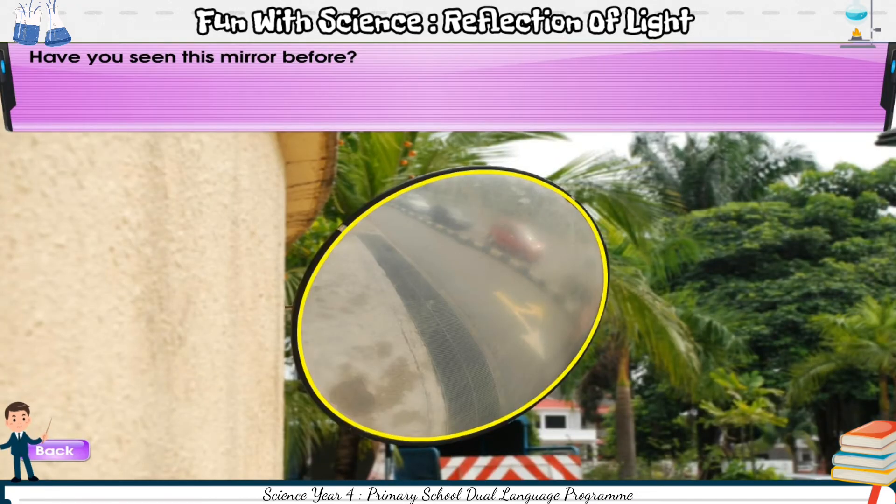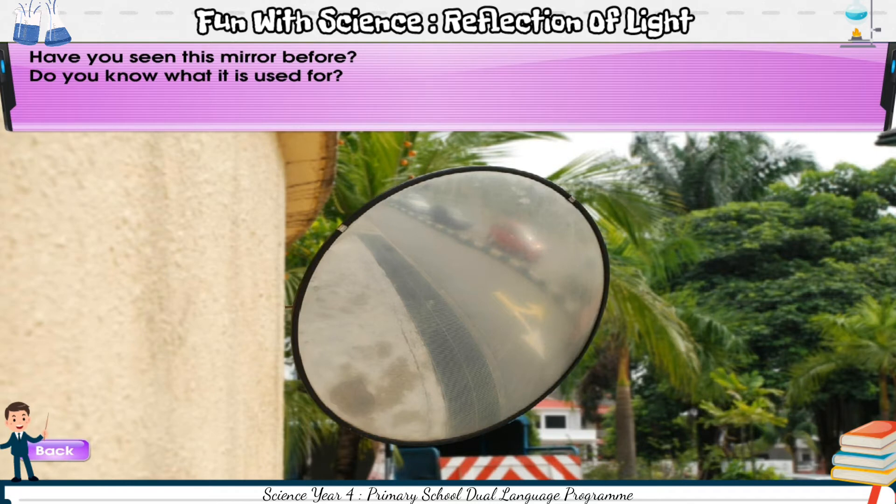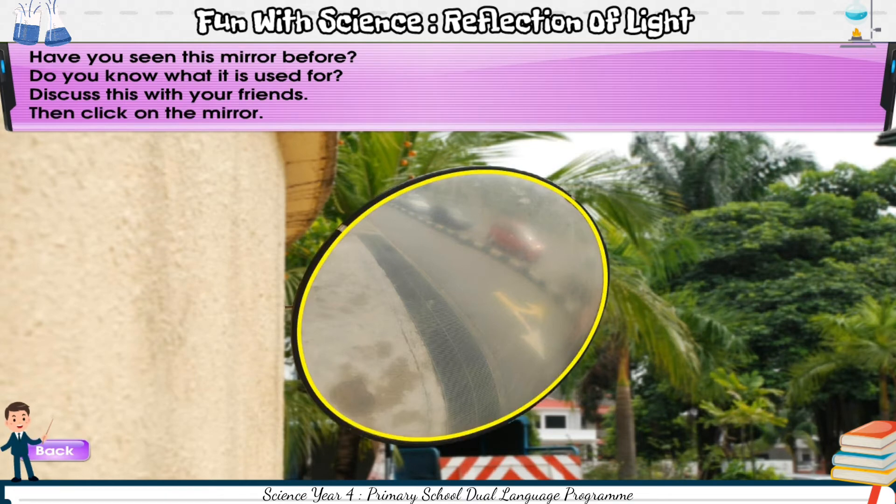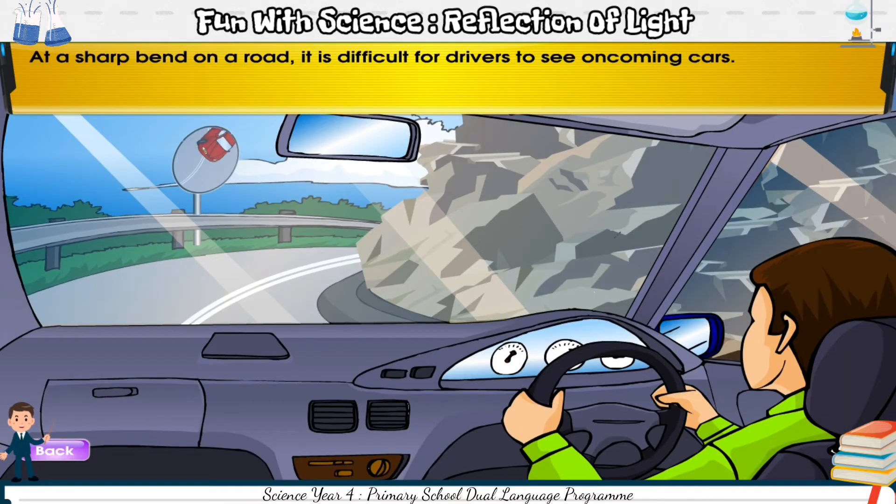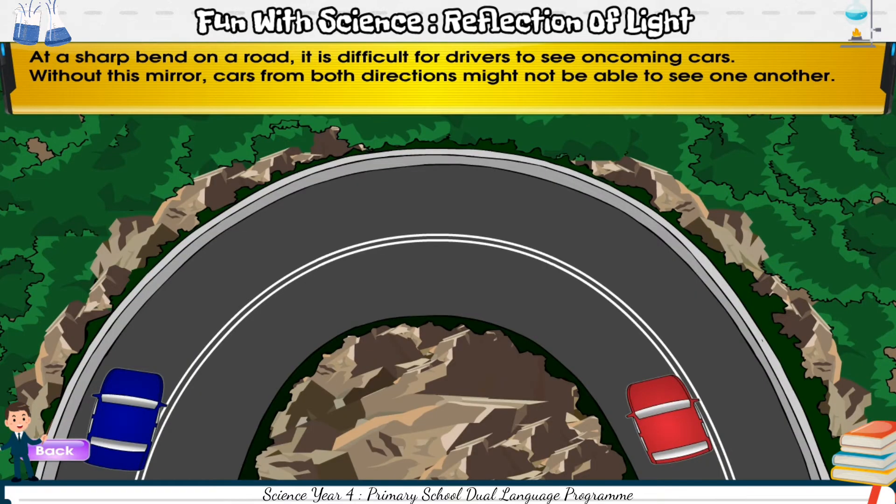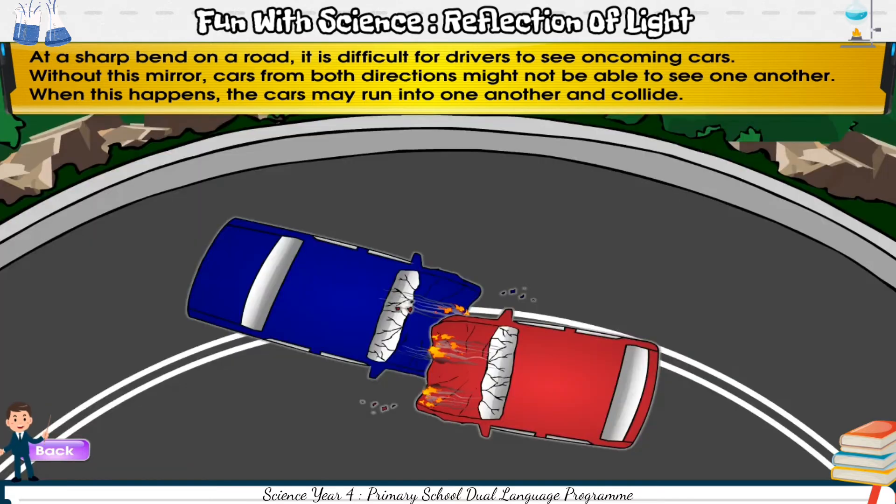Have you seen this mirror before? Do you know what it is used for? Discuss this with your friends. Then, click on the mirror. At a sharp bend on a road, it is difficult for drivers to see oncoming cars. Without this mirror, cars from both directions might not be able to see one another. When this happens, the cars may run into one another and collide.